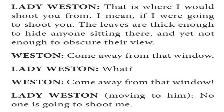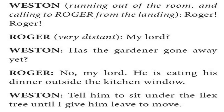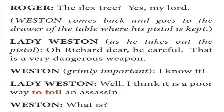Weston calls for Roger and asks whether the gardener has gone away yet. Roger says no — he is eating his dinner outside the kitchen window. Weston orders Roger to tell the gardener to sit under the Ilex tree until given leave to move. Weston then goes to the drawer where his pistol is kept and takes it out.